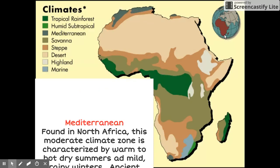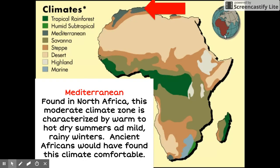The Mediterranean climate is located along the Mediterranean Sea. Found in North Africa, this moderate climate zone is characterized by warm to hot, dry summers and mild, rainy winters. Ancient Africans would have found this climate comfortable.